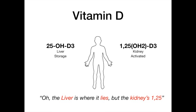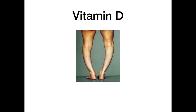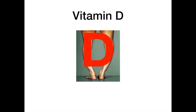This mnemonic tells you everything you need to know about this seemingly confusing topic, and it is super high yield because examiners love to ask which form of vitamin D is in which organ and whether it's the storage form or the activated form. Know this mnemonic — it will take you really far. Clinically, if you have a deficiency in vitamin D, it manifests as two different disease processes depending on age: in children it causes rickets, and in adults it causes osteomalacia. If you see a picture with bowing of the knees, the answer is vitamin D deficiency.